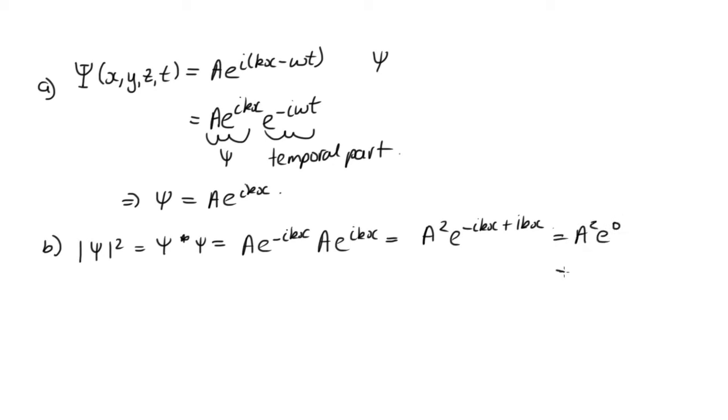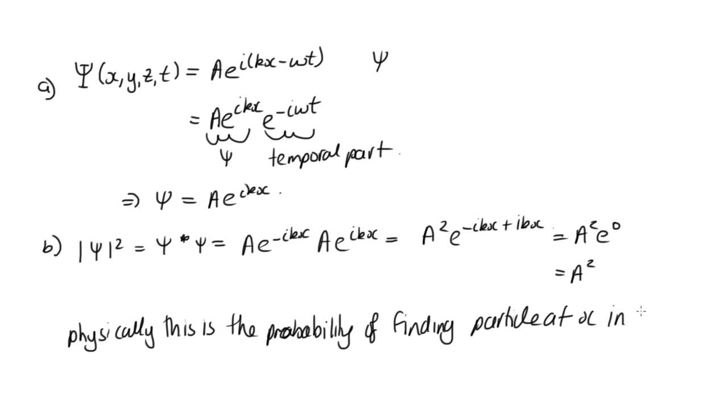e^0 is 1. So this is equal to A². And physically, this is the probability of finding a particle at x in a given time interval.